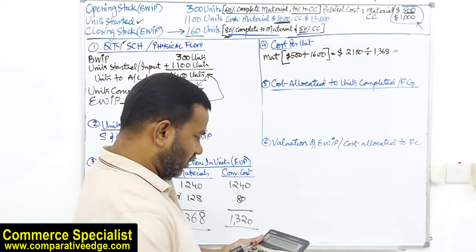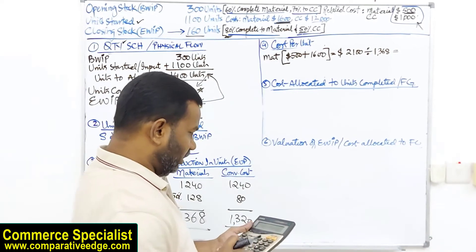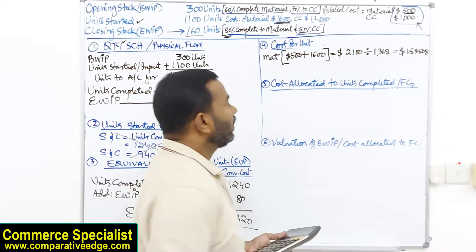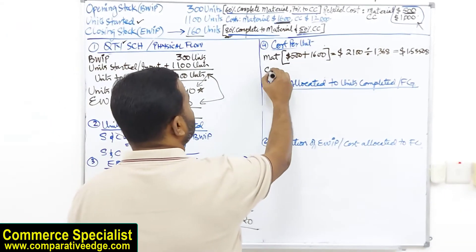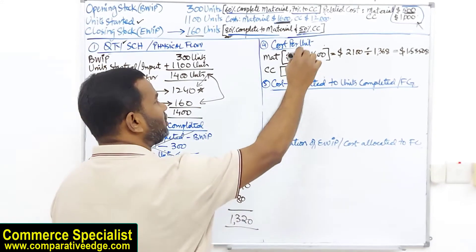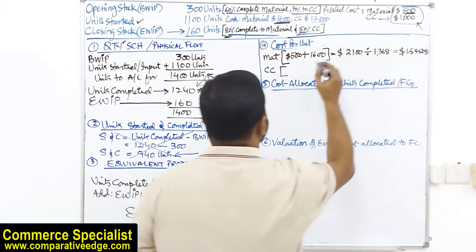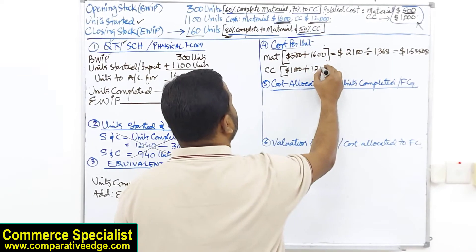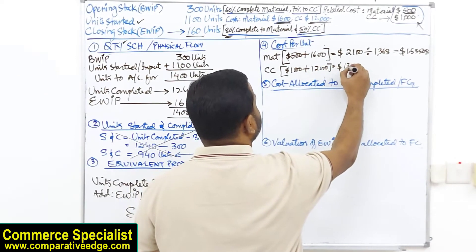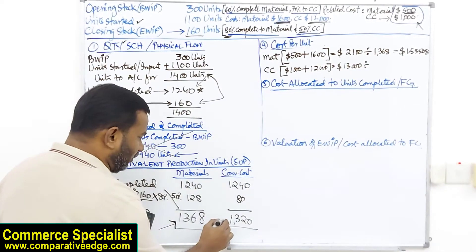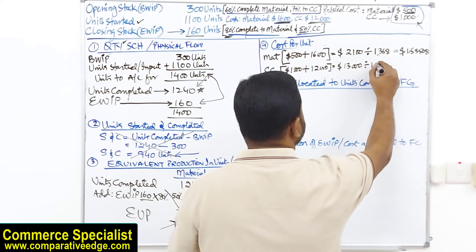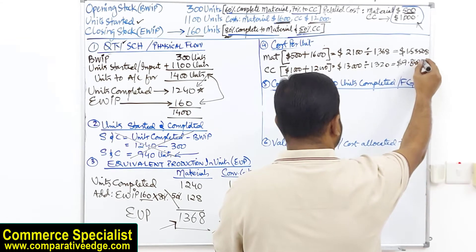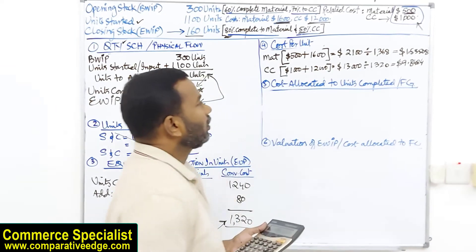$2,100 divided by 1,368 equivalent units gives $1.53508 per unit for materials. For conversion cost, we take the opening WIP conversion cost ($1,000) plus the current period conversion cost ($12,000), totaling $13,000, divided by 1,320 conversion cost equivalent units, giving $9.8484 per unit.